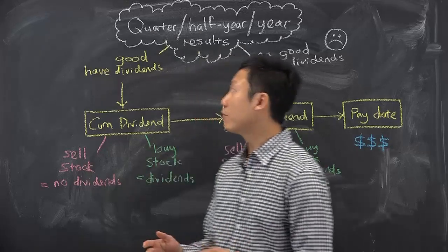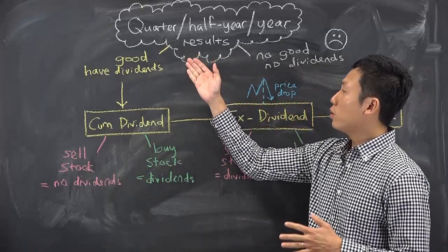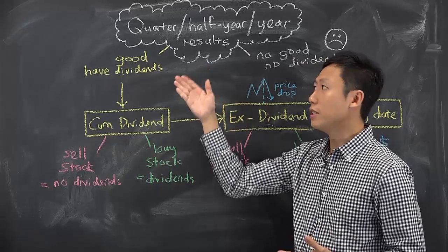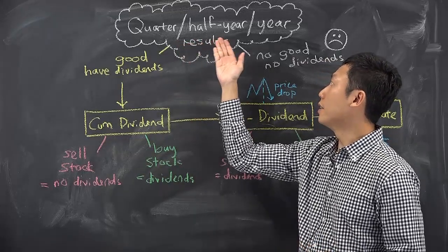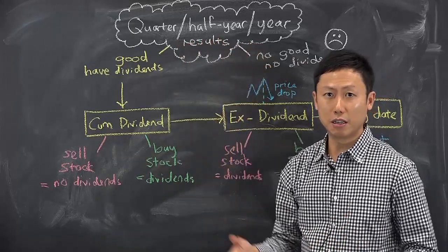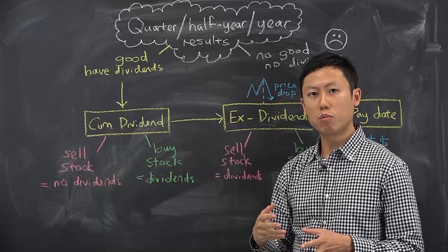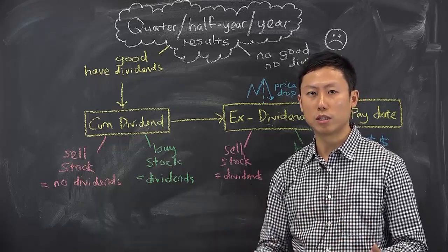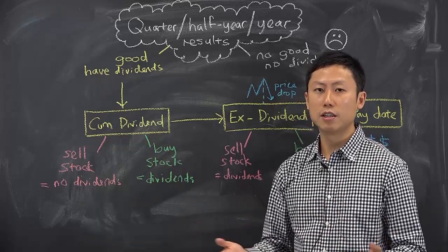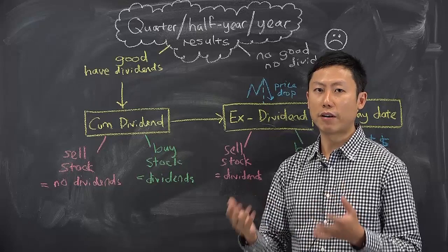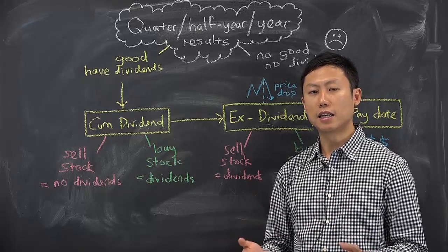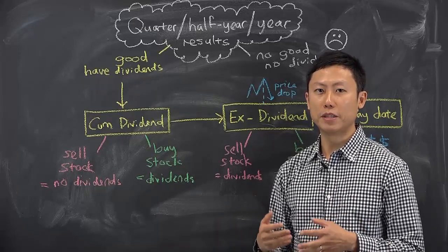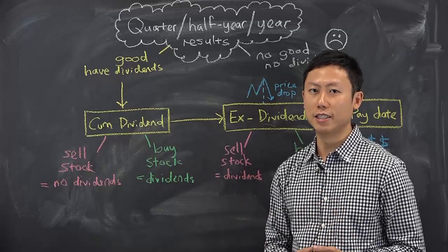Let's start from the top. A company typically will announce their quarterly, half-yearly, or yearly results, and it depends on the company the frequency of the dividend distribution. Some may give quarterly, like REITs, some may give half-yearly — two times a year — and some, or most in fact, companies will only distribute dividends once a year.